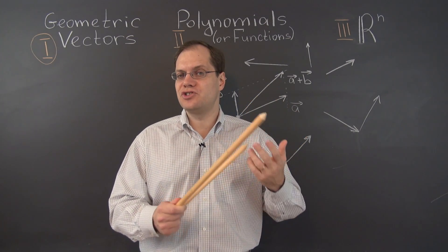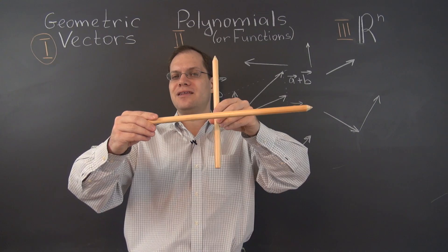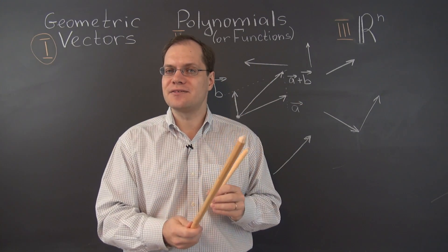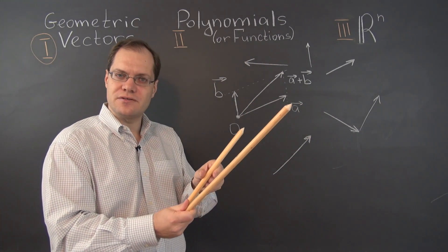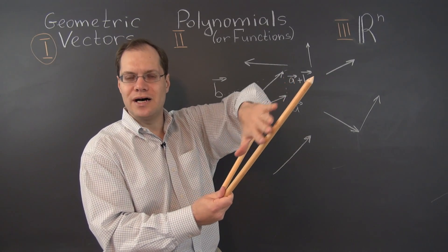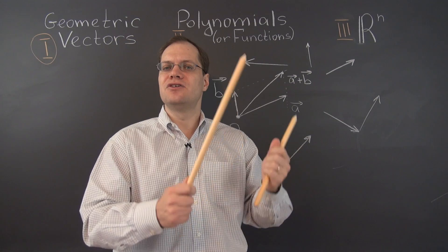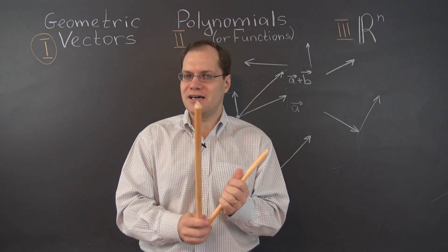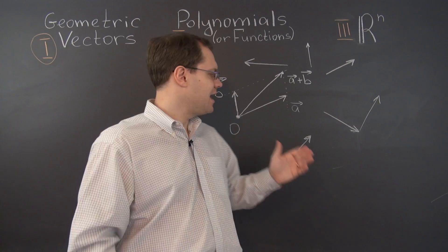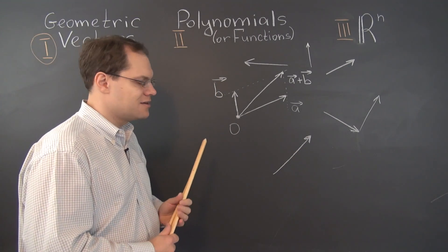Two lines in three dimensions don't necessarily intersect—they can go like this and never intersect. But in this construction, because everything happens in this one plane, the plane of these two vectors, they are guaranteed to intersect. And A plus B is defined just as well in three dimensions as it is in two dimensions.